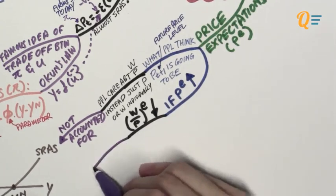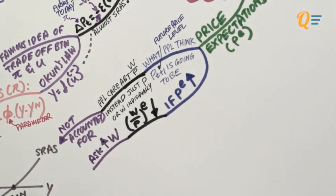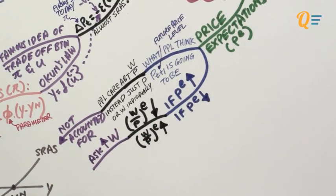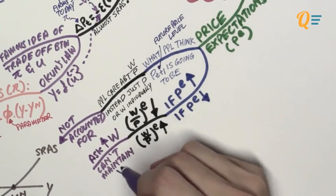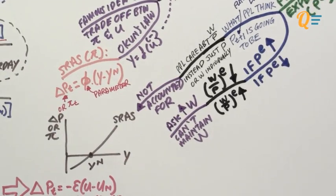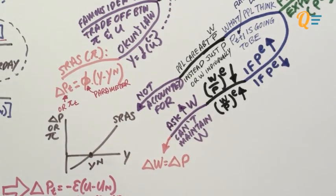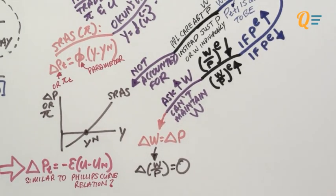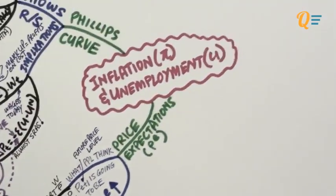If price expectations increase, people expect their real wage to decrease. They know that they will be buying fewer goods and services in the future, so they will ask for a higher nominal wage in the next period. If they expect prices to fall, they expect an increase in real wage — but they won't ask for lower wages, so their nominal wage may fall in the next period as firms gain higher bargaining power. No matter what happens, the change in nominal wage will equal the change in the price level, meaning the change in the real wage is practically zero.